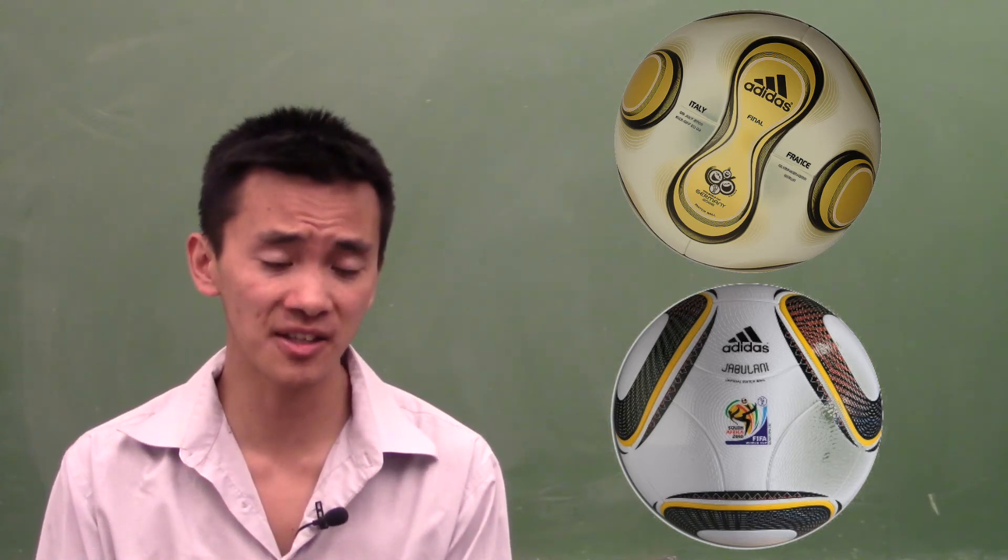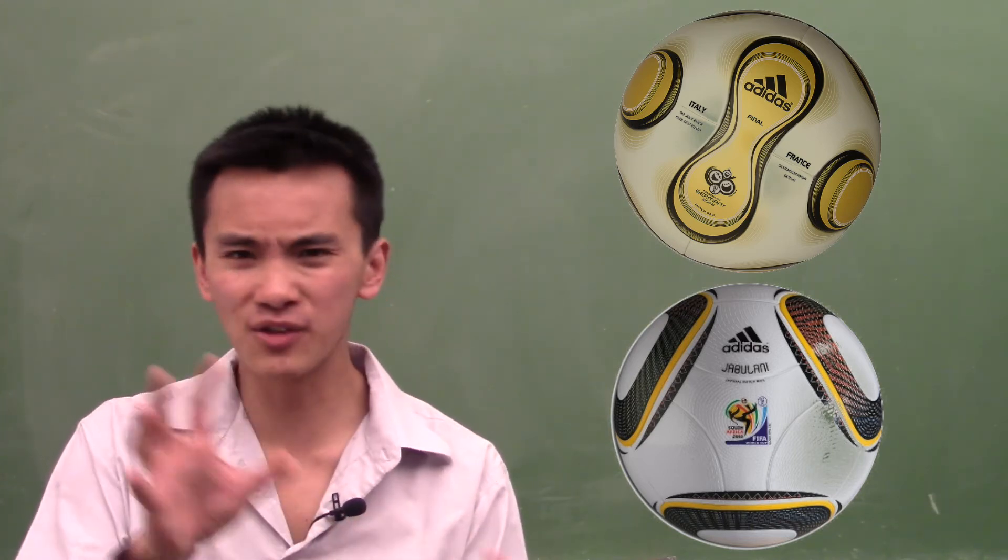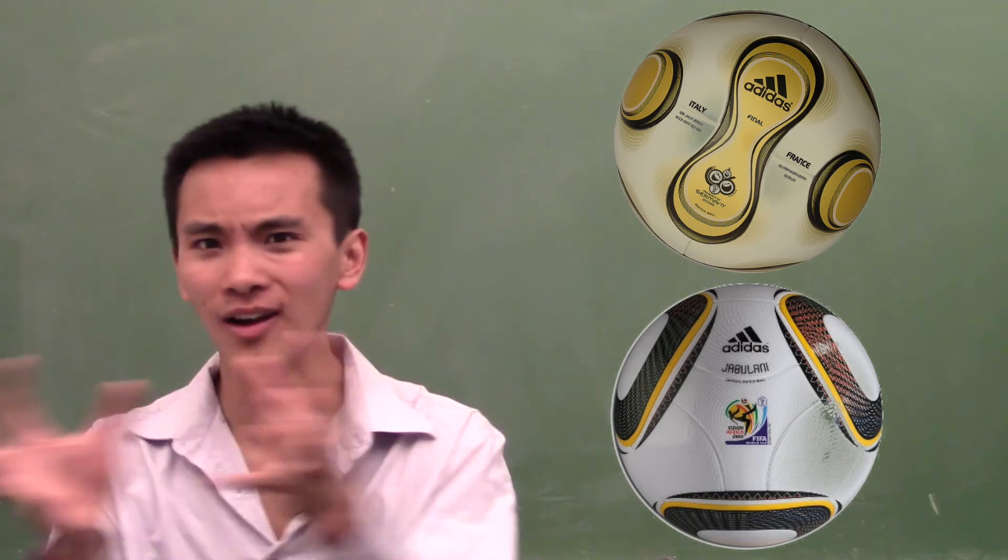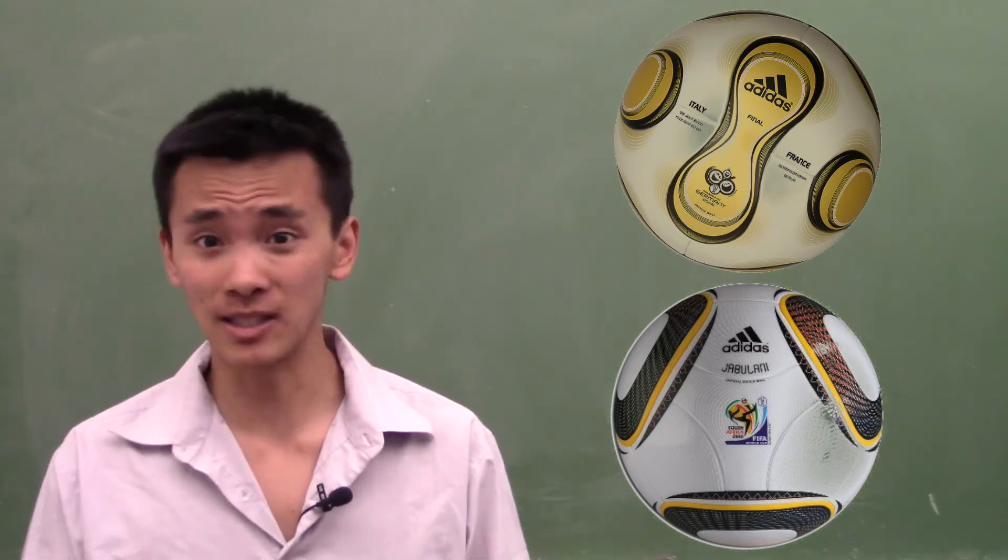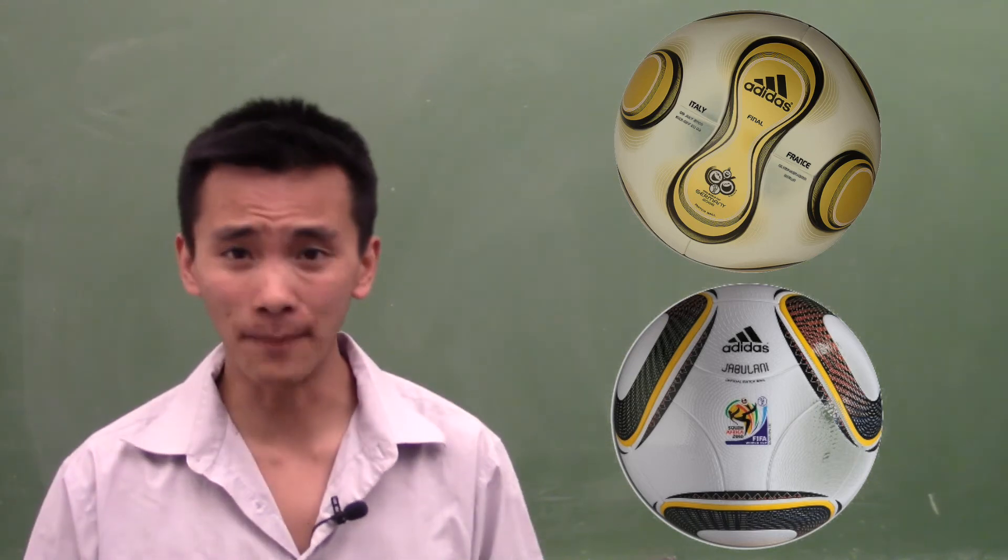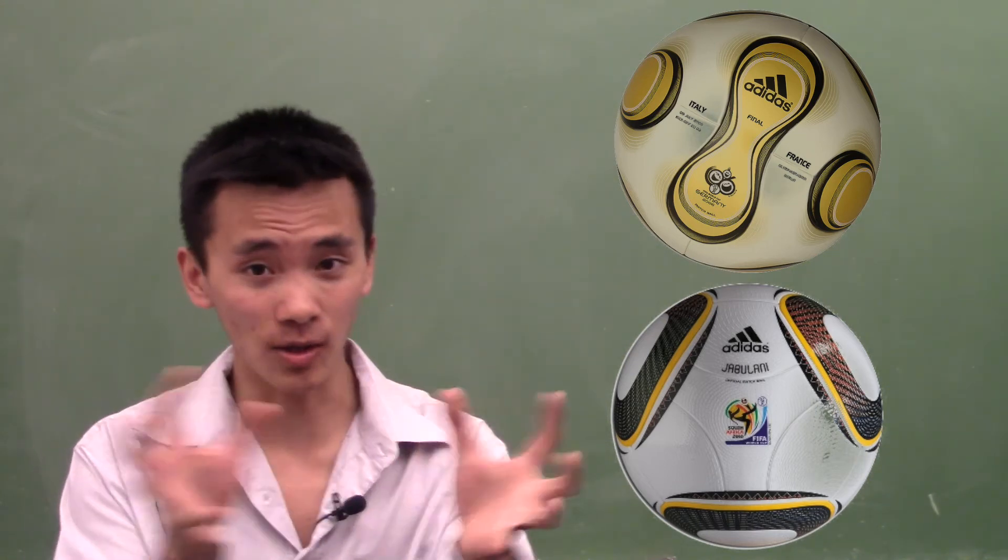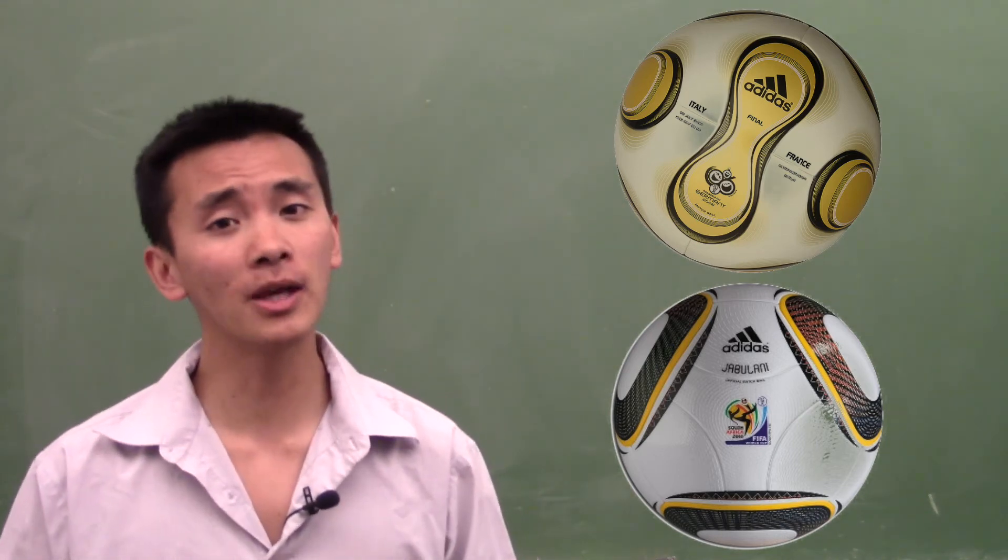And yet the surface is much rounder. In fact, both the Teamgeist and the Jabulani were criticized for being beach-volleyball-like balls, which means that the trajectory of the balls were very hard to predict. That makes up a lot of goals, but players complained. And the reason why these balls had this sort of behavior is probably because they are much rounder. And this in effect creates more turbulences behind the ball.